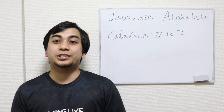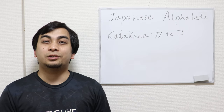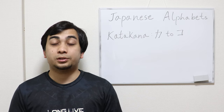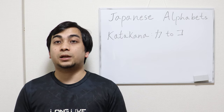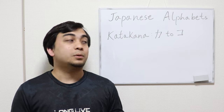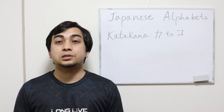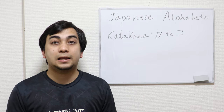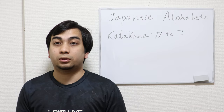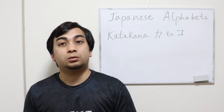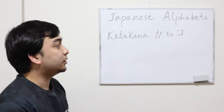Hi there, Arshin here. Today in this video, I'm going to teach you the second row of katakana, from ka to ko. You can see the five characters: ka, ki, ku, ke, ko. So let's get started.